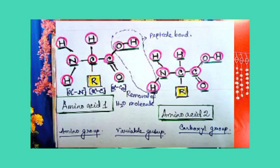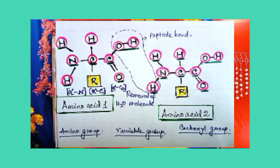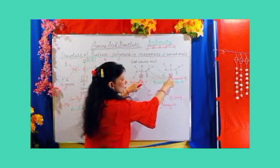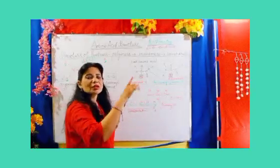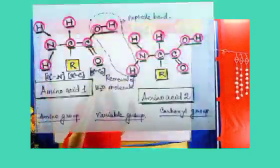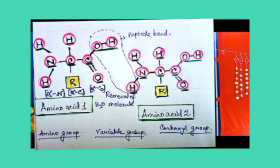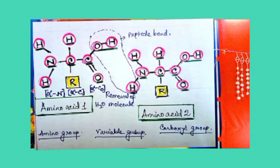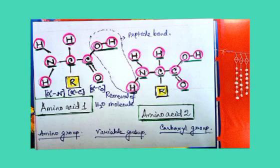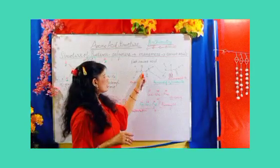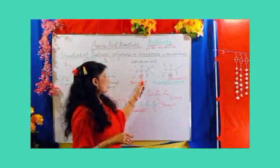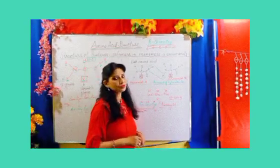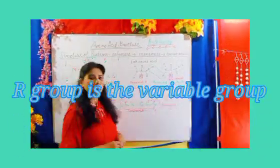The variable group differs among different amino acids, and depending on this R group, the function and structure of the protein will vary and be determined. The R group is the basis of the protein's structure and properties, because the rest of the structure is basically the same.